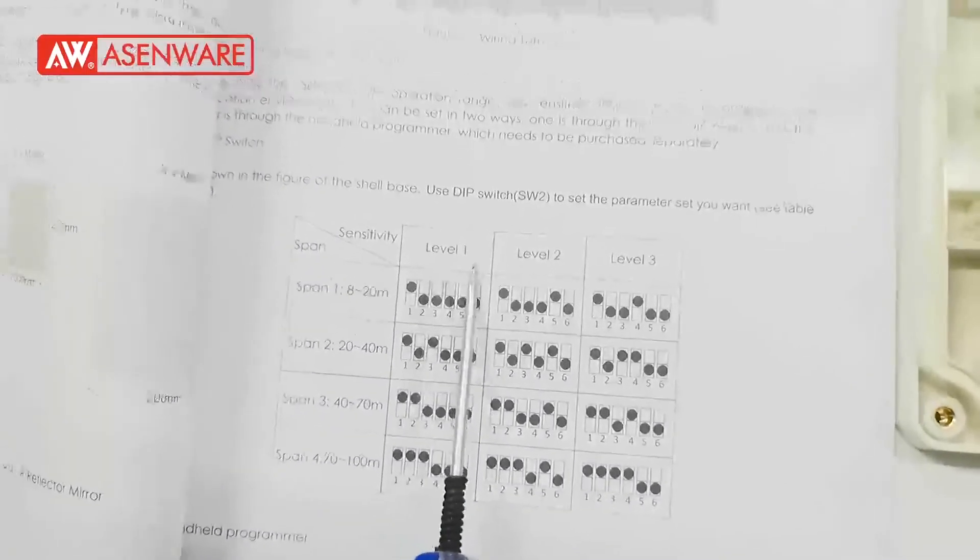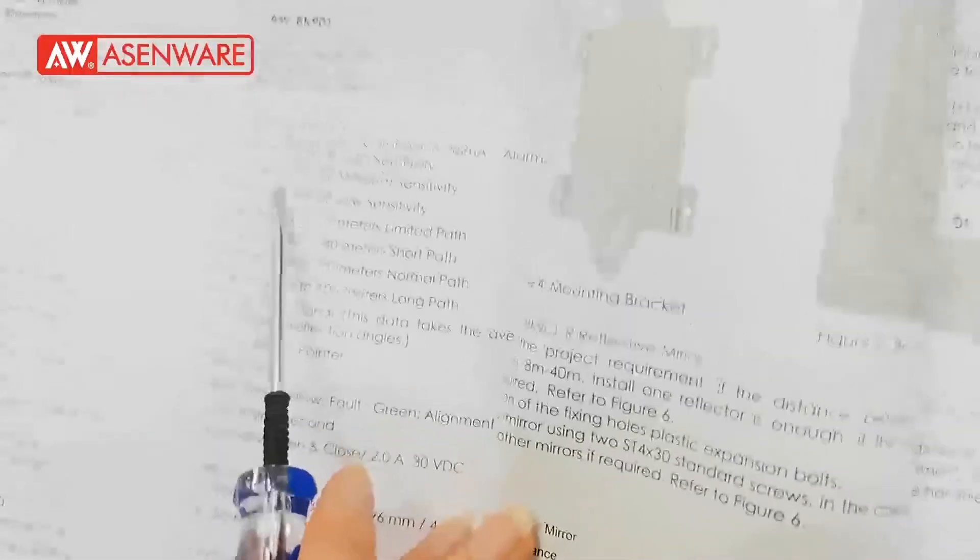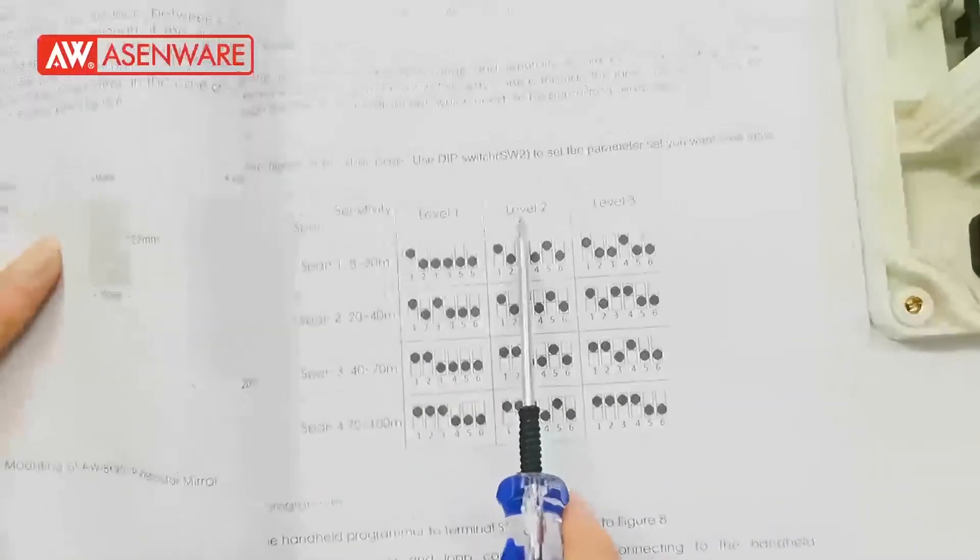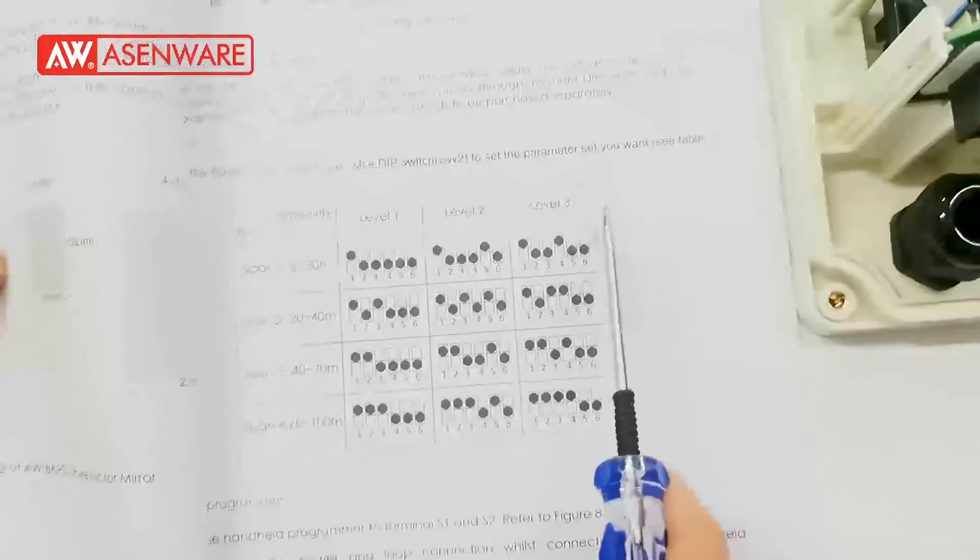The level 1 means that high sensitivity. The level 2 is the medium sensitive. The level 3 is the low sensitive.